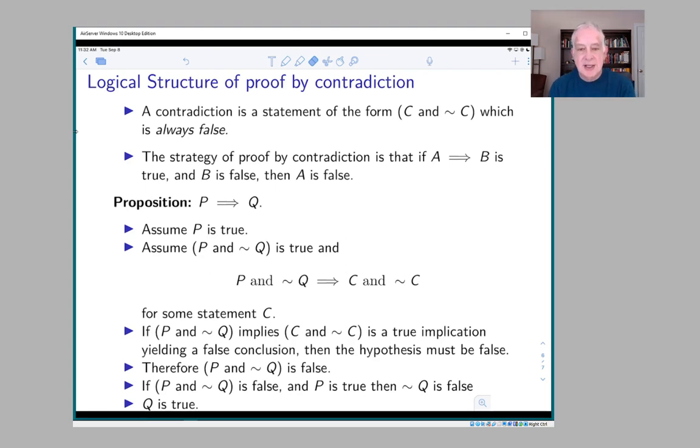So here's the deal. First of all, what is a contradiction? A contradiction is a statement which is always false, and usually they come about by using 'and' to combine a statement with its negation. So for example, 'it's sunny out and it's not sunny out' is always false. And C and not C is always false.